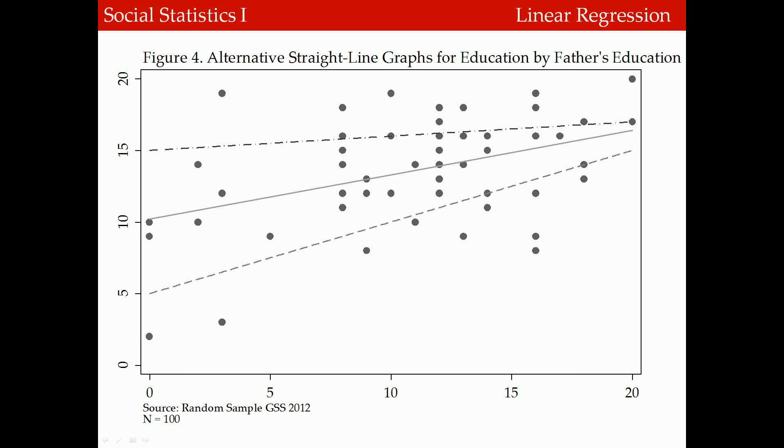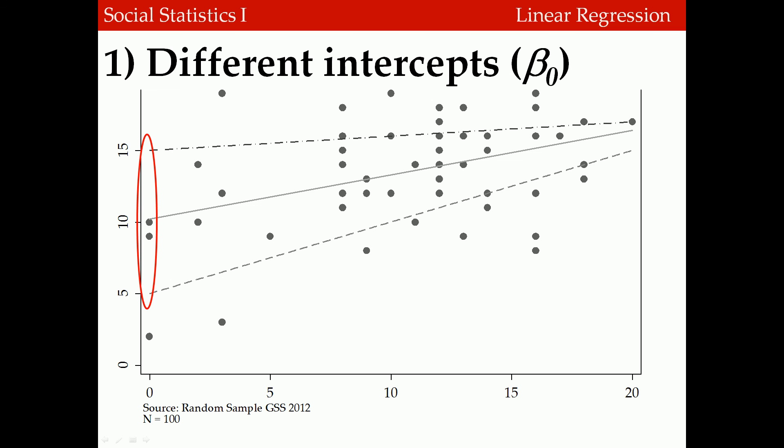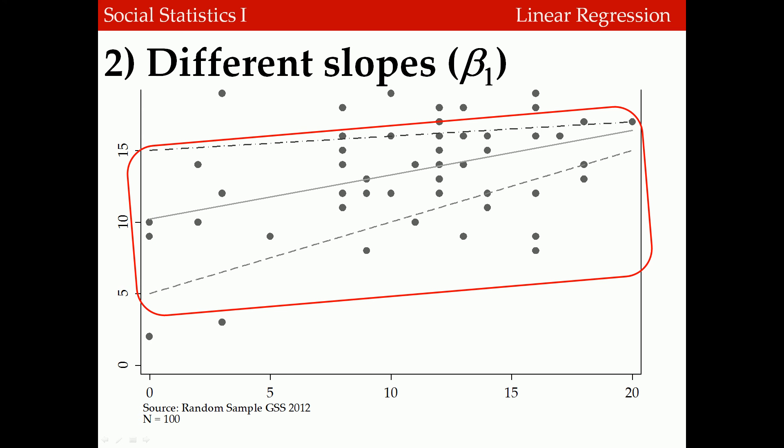This figure shows three different lines trying to describe the relationship between father's education and respondent's education. They differ in two ways: first, they cross the y-axis at different points — the location where a line crosses the y-axis is called the intercept, symbolized as beta 0. Second, they have a different pitch or slope, indicating how much respondent's education increases as father's education increases, symbolized as beta 1.